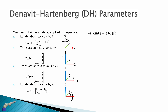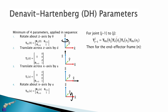For our joint frame j-1 to j we have the concatenation of all these transforms: first a rotation about z by theta, a translation about z by d, a translation about x by a, and a rotation about x by alpha. To get the forward kinematics from frame 0 to frame N, we just multiply all of these together — the transform from j-1 to j for every joint j up to N joints.